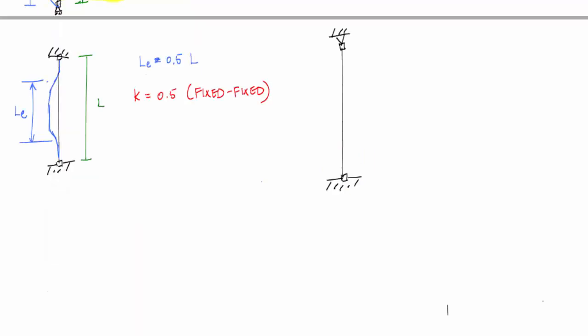Pin and fixed. And here, in this case, the buckled shape looks like this. And this length is equal to 0.7 L, and that would tell us the effective length factor is 0.7.